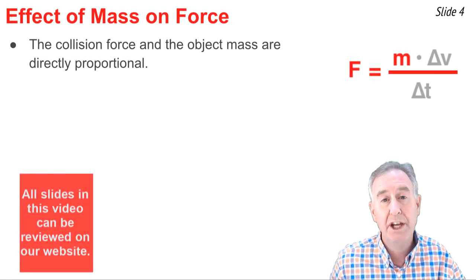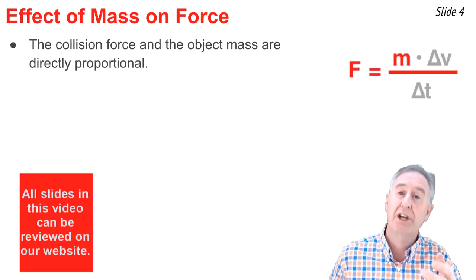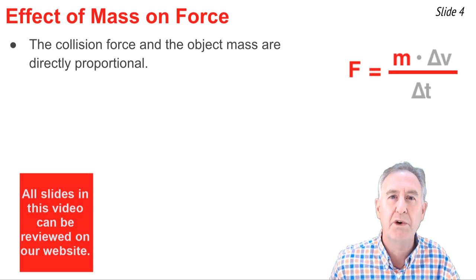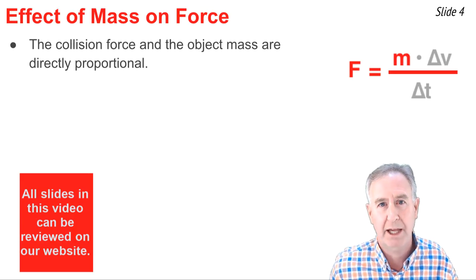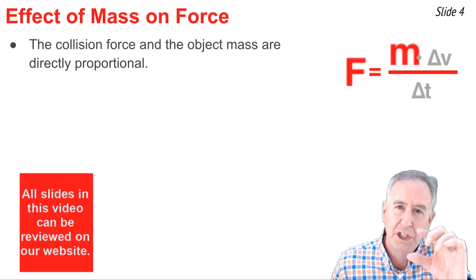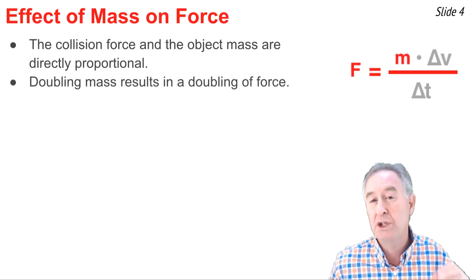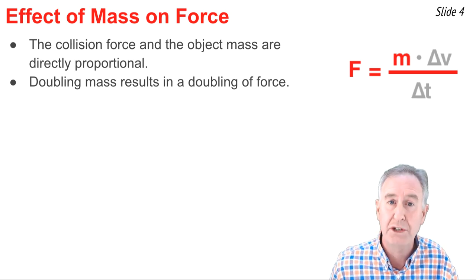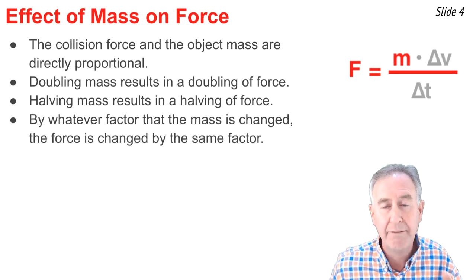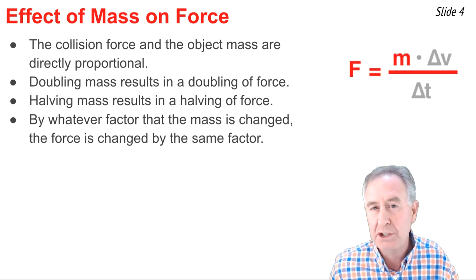Let's begin by discussing the relationship between mass and collision force. The equation shows force on one side and object mass in the numerator on the opposite side. We describe the collision force as being directly proportional to the object mass. If you increase the object mass, you increase the collision force; if you decrease the object mass, you decrease the collision force. If you double the mass, you double the collision force; if you half the mass, you half the collision force. By whatever factor you change the mass, you change the collision force by the same factor.